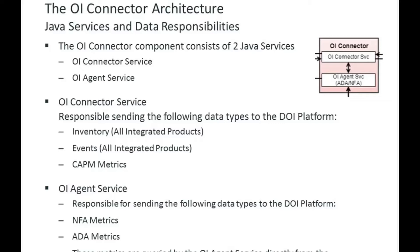For events, all events on the set of inventory being delivered flow through the OI Connector service. For metrics, it harvests CAPM metrics directly out of CAPM via the OpenAPI interface, which is an OData query interface built into the CAPM product. The connector queries metric data over OpenAPI and sends it directly to Jarvis through the ingestion API.